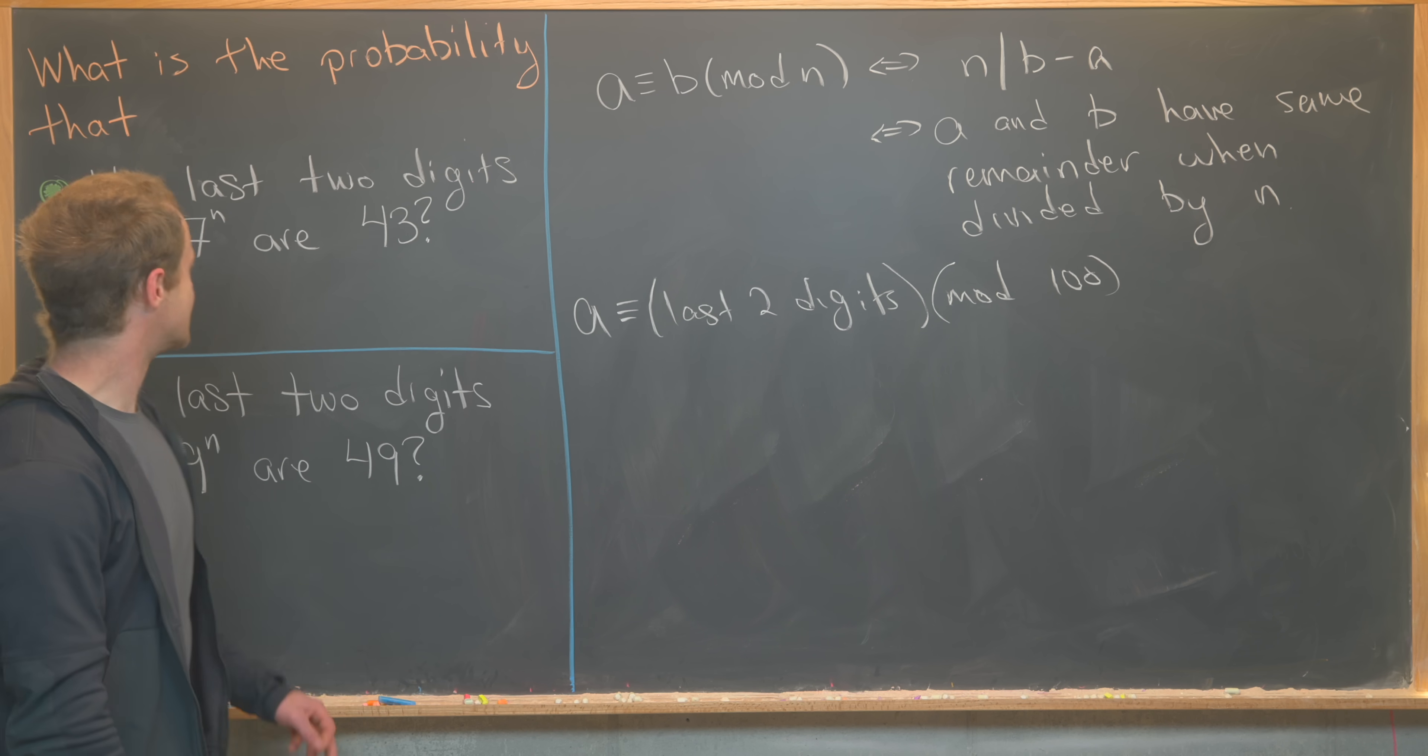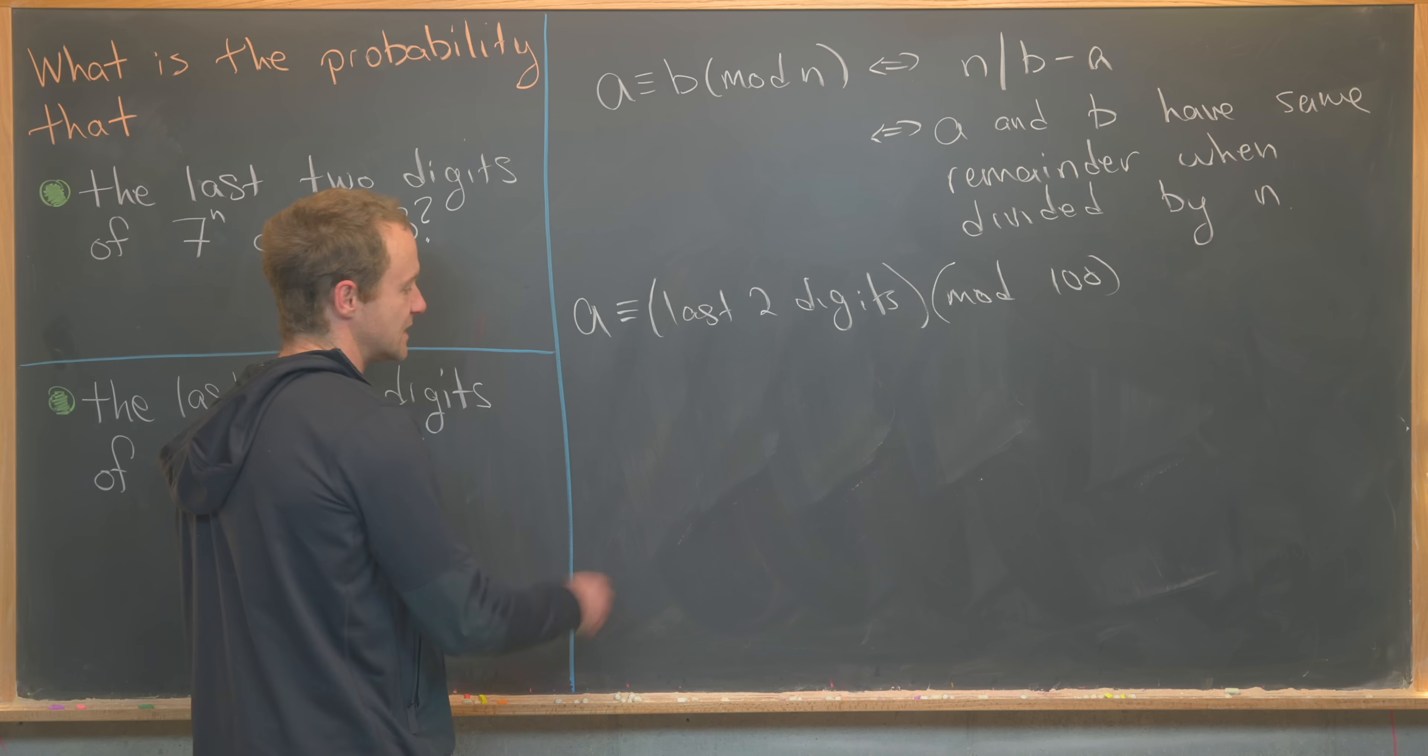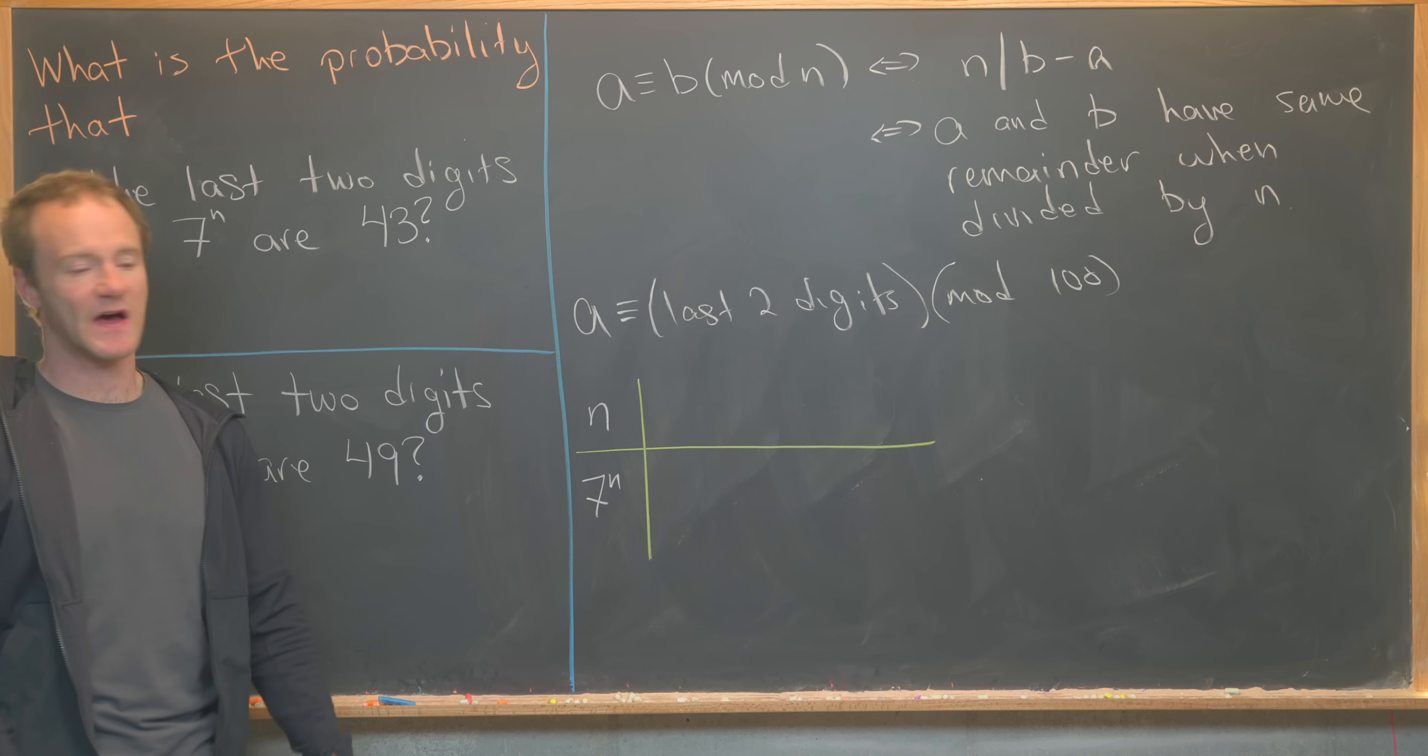So what that means is we want to calculate 7 to the n mod 100. And that's, in fact, the chart that we'll make. So let's start building that chart. We'll have n and then we'll have 7 to the n. And let's run through some values of n.